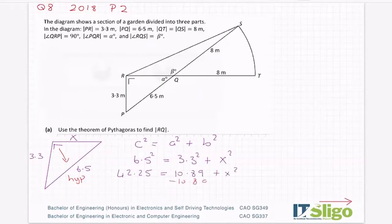Okay, so minus 10.89 from both sides, because we're solving for X squared. So 42.25 minus 10.89, and I am getting 31.36 being equal to X squared. I don't want X squared, I want X the side. So the opposite of squared is square root. So X is equal to the square root of 31.36, or X is equal to 5.6.